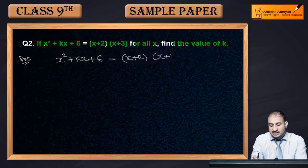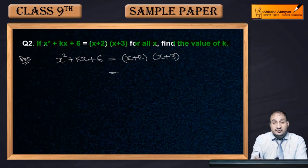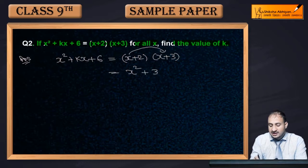Now (x+2) into (x+3), what will it become? If you multiply x with the bracket, what will you get? x² + 3x.